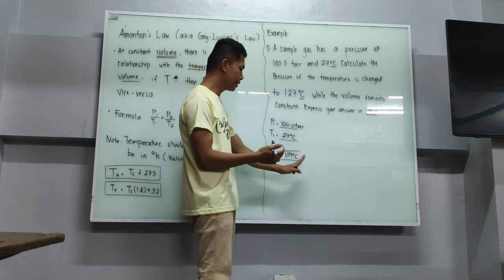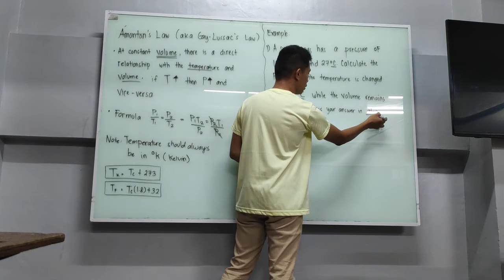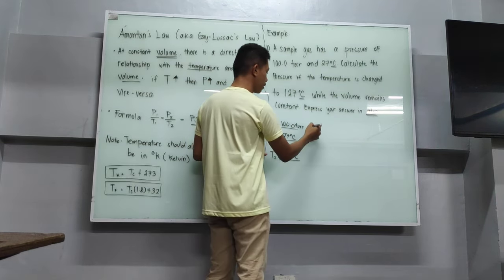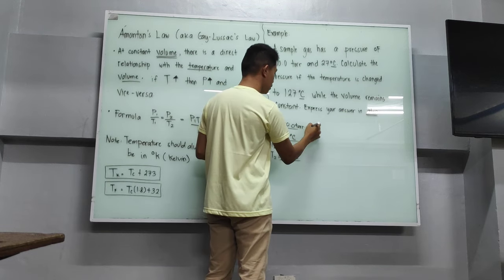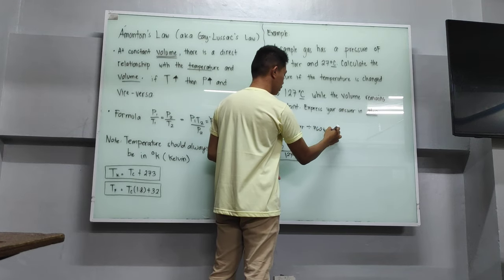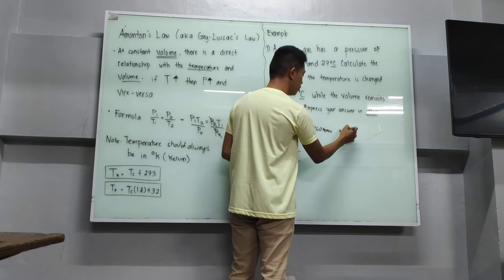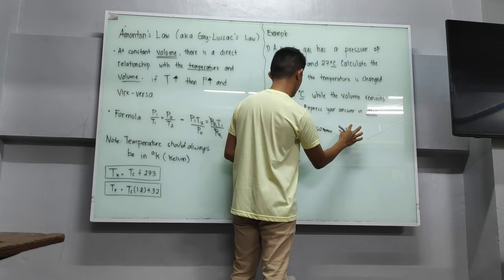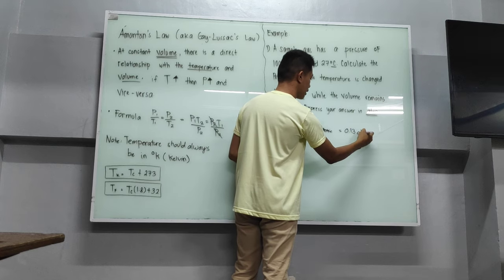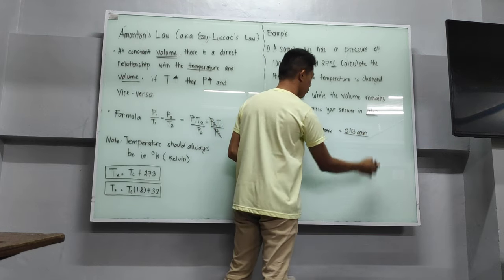However, we cannot use this given directly because we need to express our answer in ATM or atmosphere. So first we need to convert torr into atmosphere. We divide 100 torr by 760 torr, the units cancel, and we get approximately 0.13 ATM. This will be our new given for that pressure.